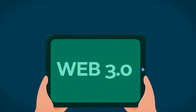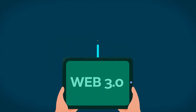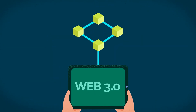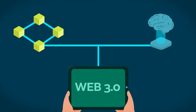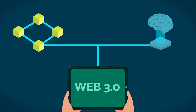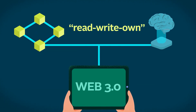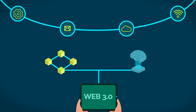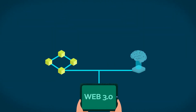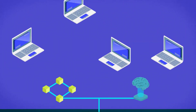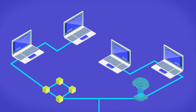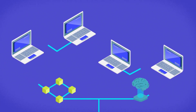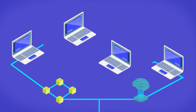Web 3.0 plans to use blockchain technology and other technologies like artificial intelligence to create a read-write-own web. There won't be a need for centralized servers. Instead, websites will run on peer-to-peer networks distributed across several computers worldwide.